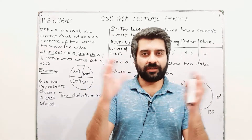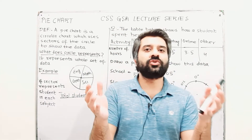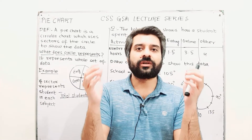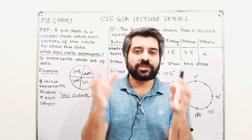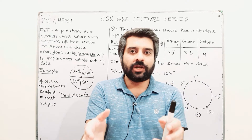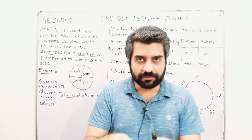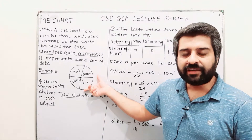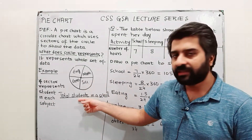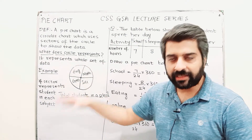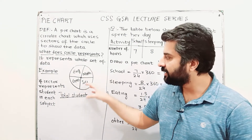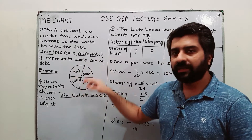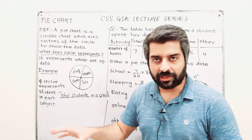A pie chart is basically a circle divided into different sectors or slices. Each sector or slice shows a particular part of that whole circle. For example, here is a circle in which we have given the total number of students in a school. The whole circle represents the total number of students in the school.